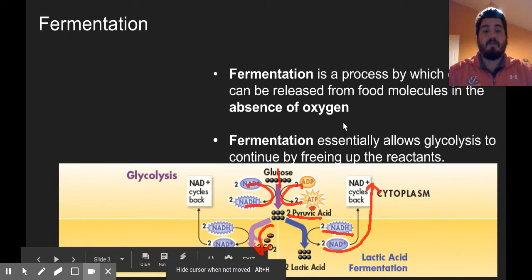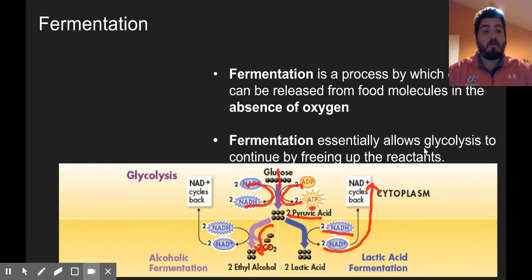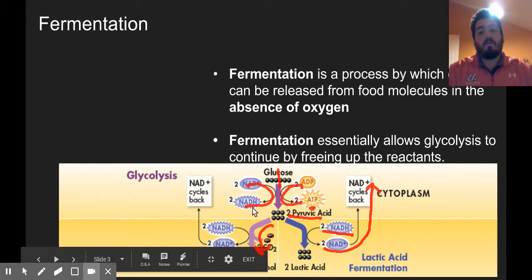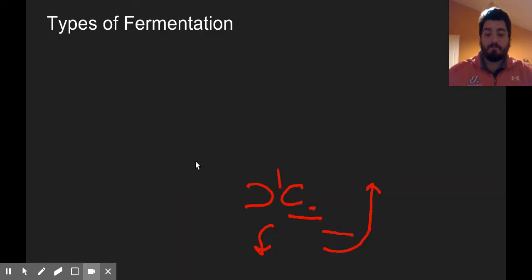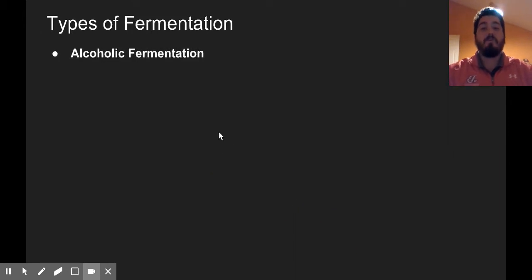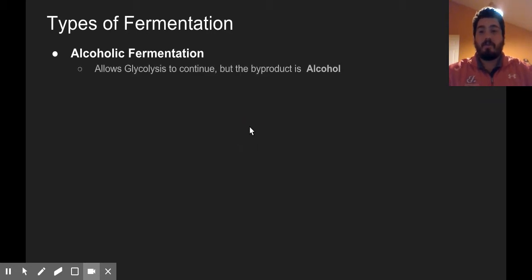To summarize and make it really short: fermentation is just what's happening to allow glycolysis to continue. Don't focus too much on the chart — if you want to know about the NADHs and NAD+ going back you can, but really it's just a process that allows glycolysis to keep happening. We actually have two types of fermentation. The first one you may have heard of before is called alcoholic fermentation, and this allows glycolysis to continue — it's one of the two types of fermentation.